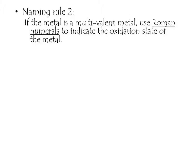Now that you've learned to write the chemical formula from the name, this will show you how to write the name from the chemical formula. This is where it differs from simple binary ionic compounds — because transition metals have more than one possible charge, there's one extra step to determine the name.